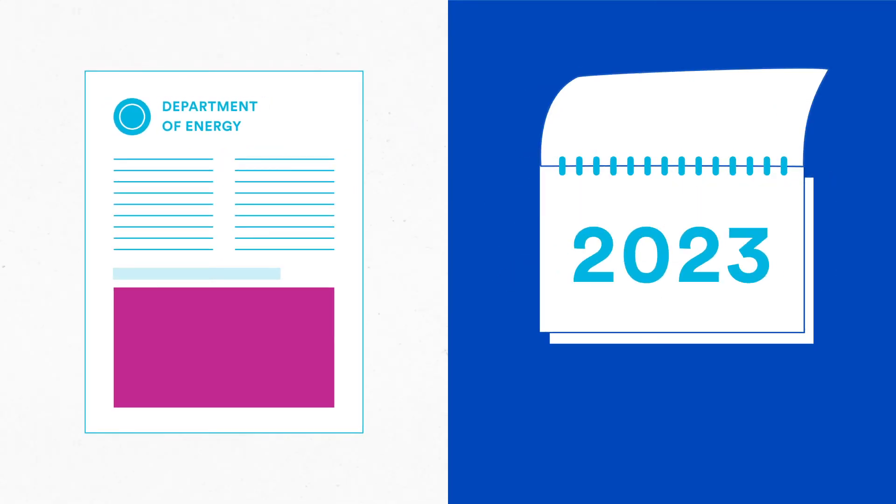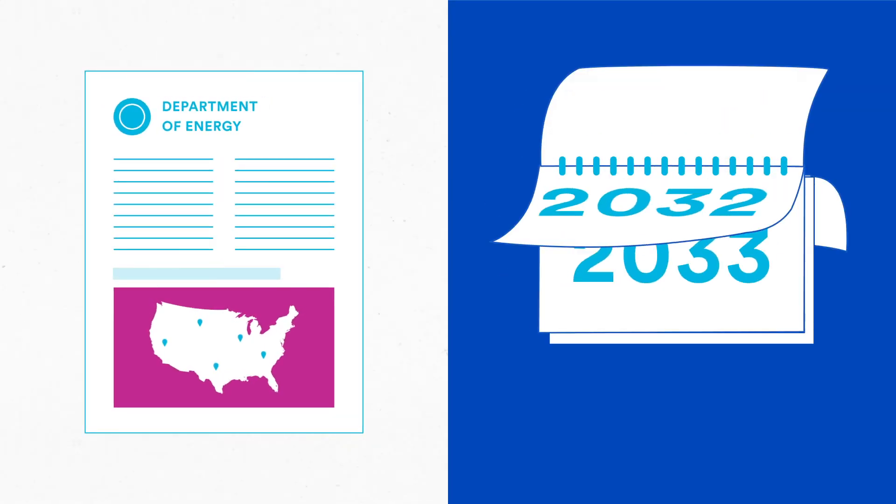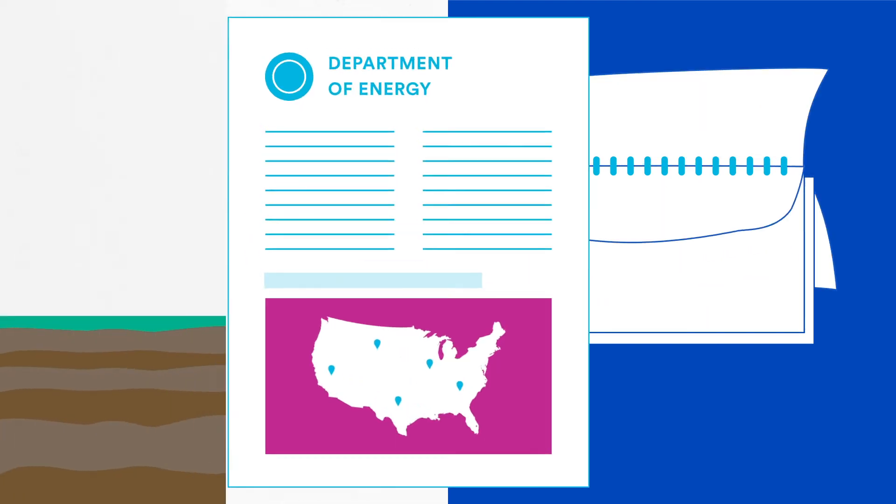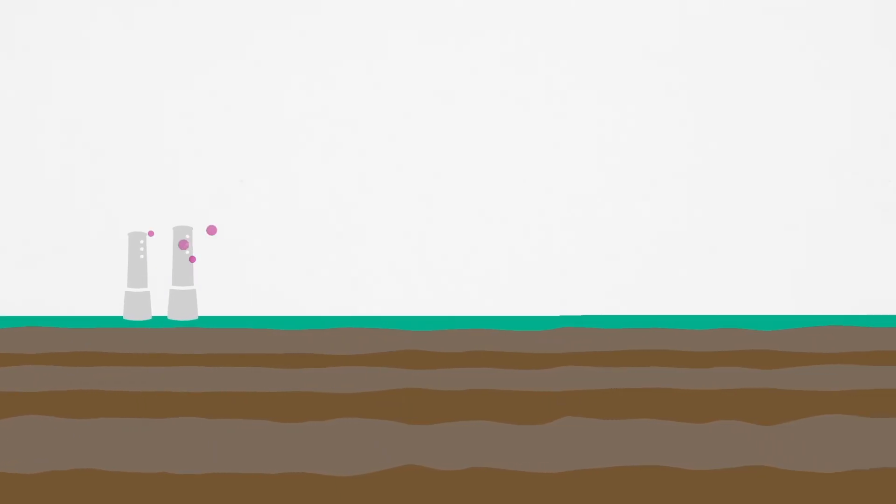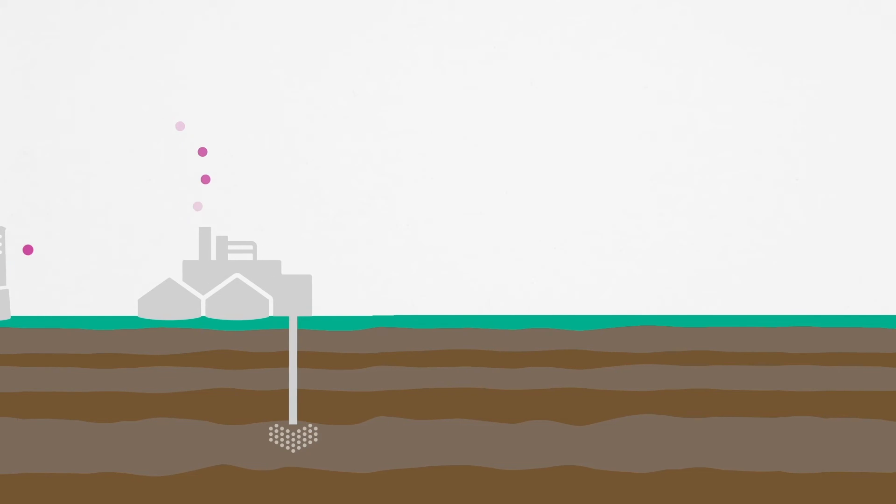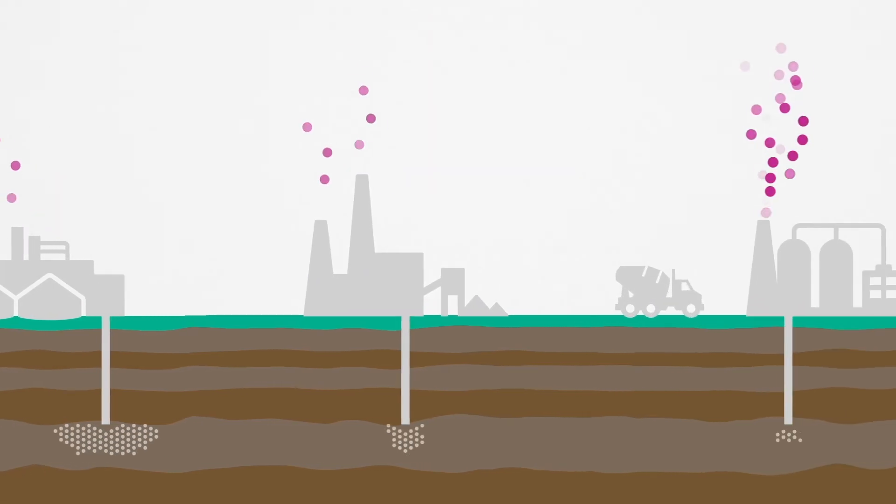The Department of Energy estimates that the US has the potential to store hundreds of years worth of our current annual emissions captured directly from air and biomass as well as stationary sources such as power plants and cement and steel factories.